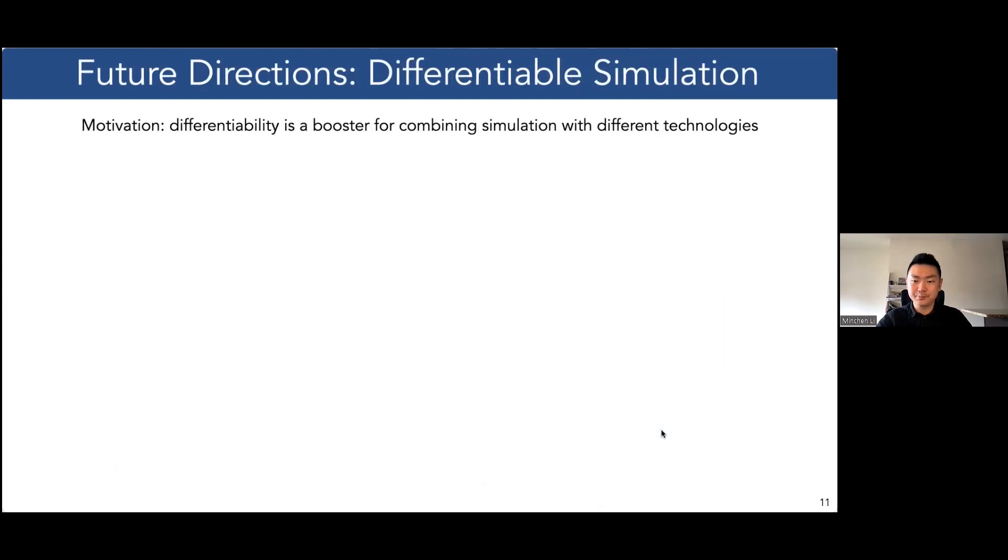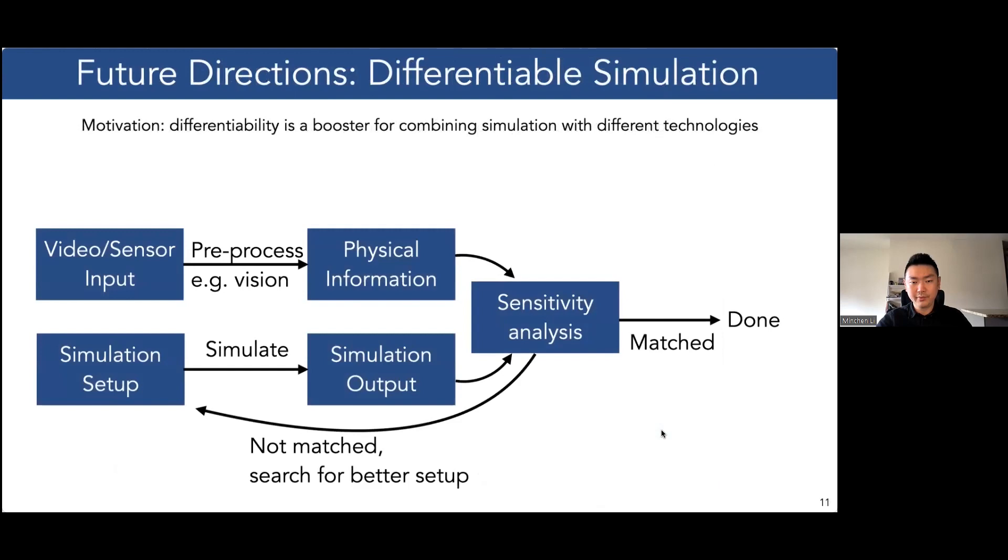And that brings the third direction, which is combining simulation with data from video or sensor inputs. IPC enables, for the first time, to back-propagate sensitivity information, even for processes involving extremely complicated contact. Additionally, machine learning, especially neural networks, can play an important role in this pipeline as a controller for robots or a visual processor for calibrating the simulation.